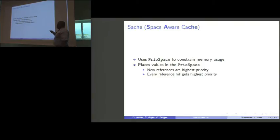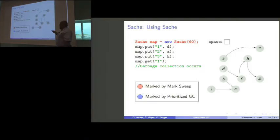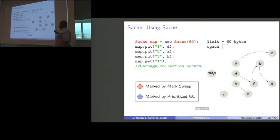We have this edited garbage collector. But, that doesn't really solve our cache problem on its own. So, we implemented the sache, which is short for a space-aware cache. It's a data structure that uses the priorities of the prior space to constrain memory usage for that data structure. It will place the values in the prior space. For its eviction policy, it will make sure that newest references are given highest priority. Whenever there's a hit to the actual sache, that item gets highest priority. Basically, an LRU. This is what the sache looks like. It's just a hash map that also happens to have a prior space stuck in it.